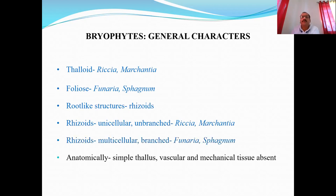Anatomically, the plant body of bryophytes is very simple and parenchymatous. There is absence of vasculature and absence of mechanical tissues, so plant bodies become soft and non-vascular. Therefore, these are also called non-vascular cryptogames or non-vascular land plants.